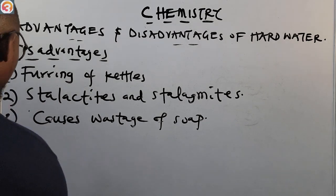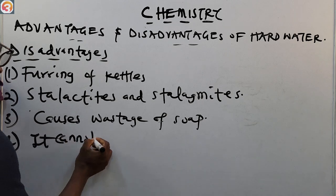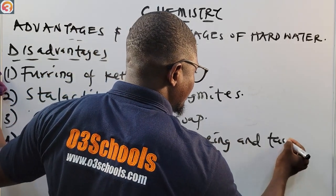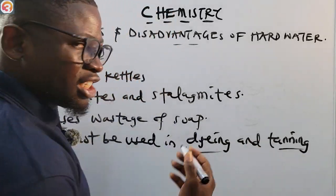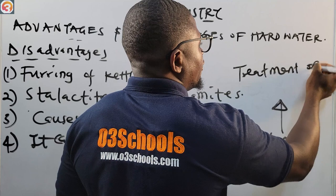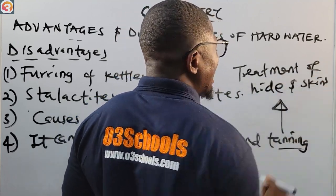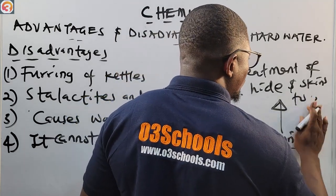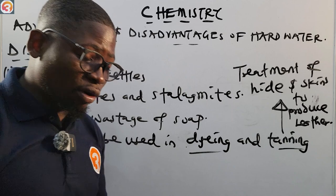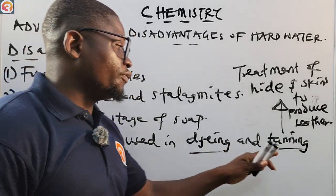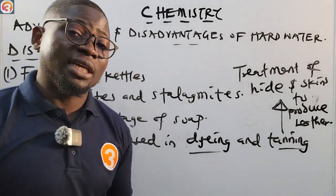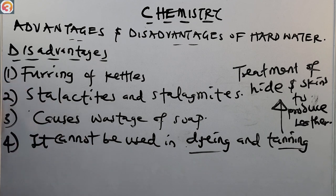Another disadvantage of hard water is that it cannot be used in dyeing and tanning. Tanning is the treatment of hides and skins of animals to produce leather. Hard water cannot be used for dyeing a cloth, and it cannot be used for tanning — if used, the quality of the leather produced will not be good.